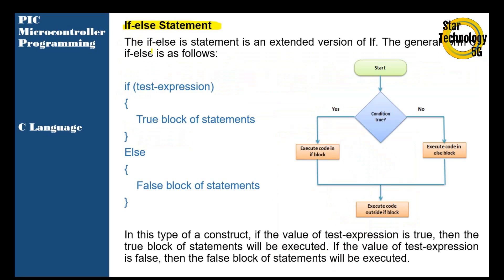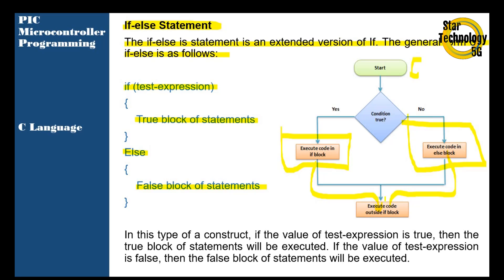The if-else statement is an extended version of if. The general form of if-else is: if test expression is true, execute the block of statements; else execute the false block of statements. In the figure, here is the program start. If the condition is true, it will execute that block of code, and then it will exit from the if statement.